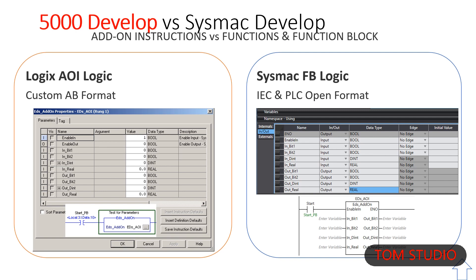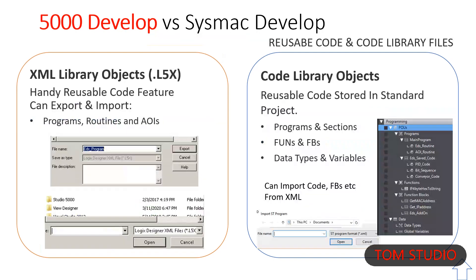Since Omron can have multiple instances of Studio open at once, you can copy and paste code from other projects. Many users have a sample code folder with all kinds of shared code. You can also have one project with all of your most common code in it. Although you can import programs, structures, etc. from XML, you cannot export.